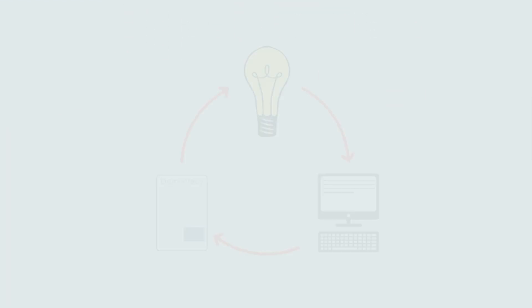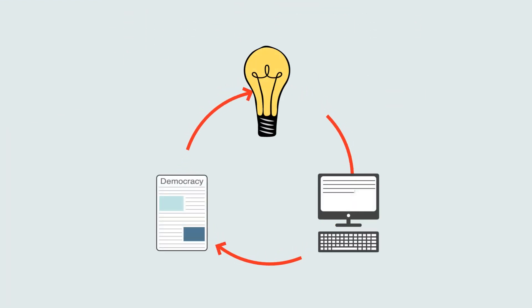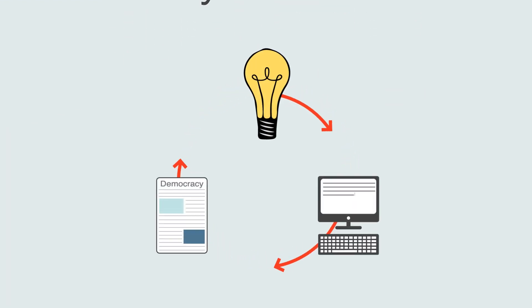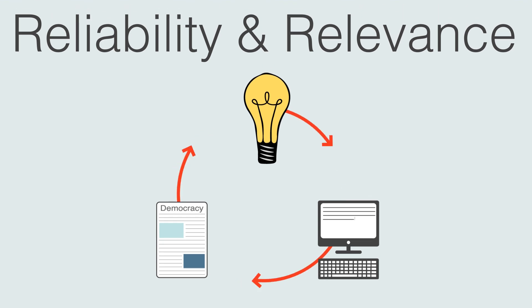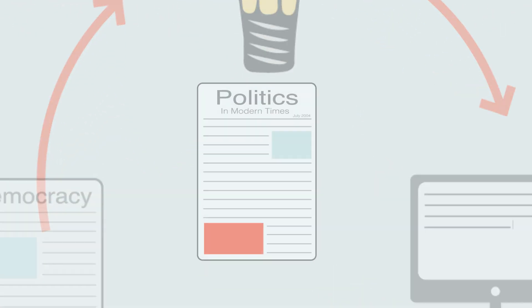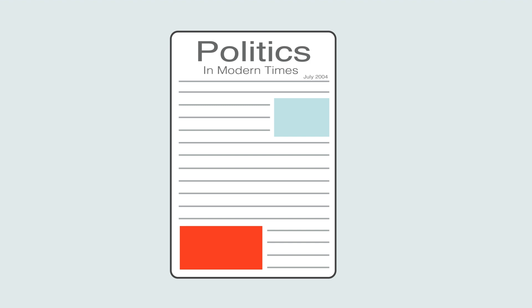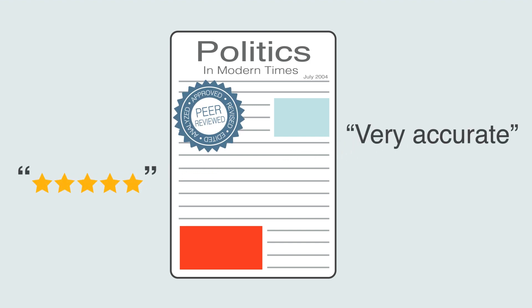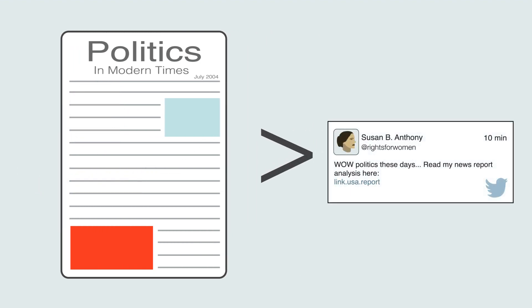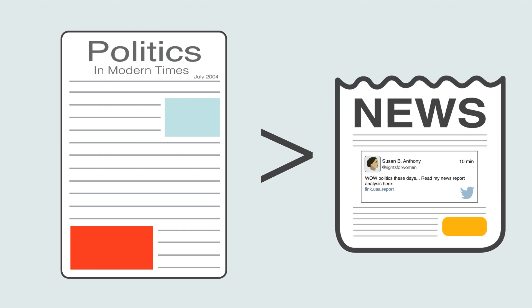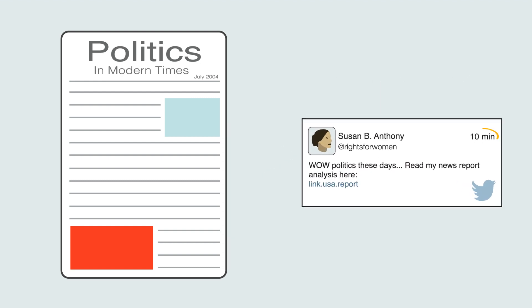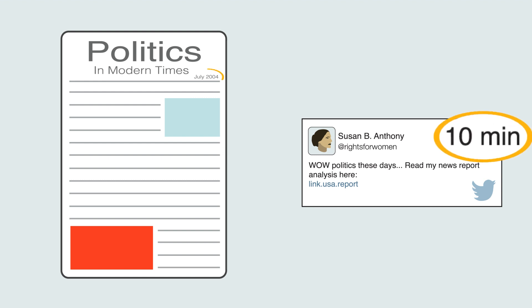The processes that went into creating a source will determine its reliability and relevance. For example, an article published in an academic journal will have been researched and edited thoroughly and will generally be more accurate than a tweet or newspaper article. However, tweets and newspaper articles can be published instantly and therefore may be more relevant than a possibly outdated academic article.